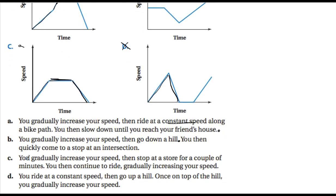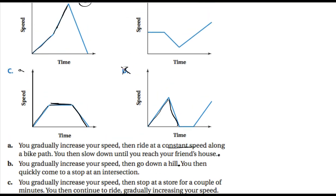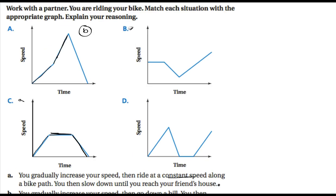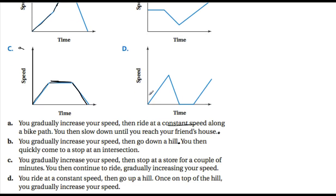Situation C: you gradually increase your speed, then stop at a store for a couple of minutes, then continue gradually increasing your speed. That's graph D — gradually increasing, speed goes down to zero stop, flat line while you're at the store with time continuing but speed at zero, then gradually increasing again as you bike away.